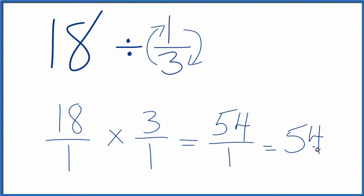If you divide 54 by 1, you'll get 54. So in answer to our question, 18 divided by 1 third, that equals 54. If you multiply 54 times 1 third, you get 18. So we did this correctly.